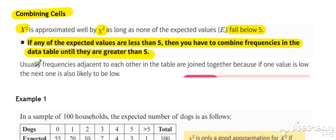It's usually frequencies adjacent to each other in the table that are joined together, because if one value is low, the next one is also likely to be. So we'll see that played out in our first example in a second.